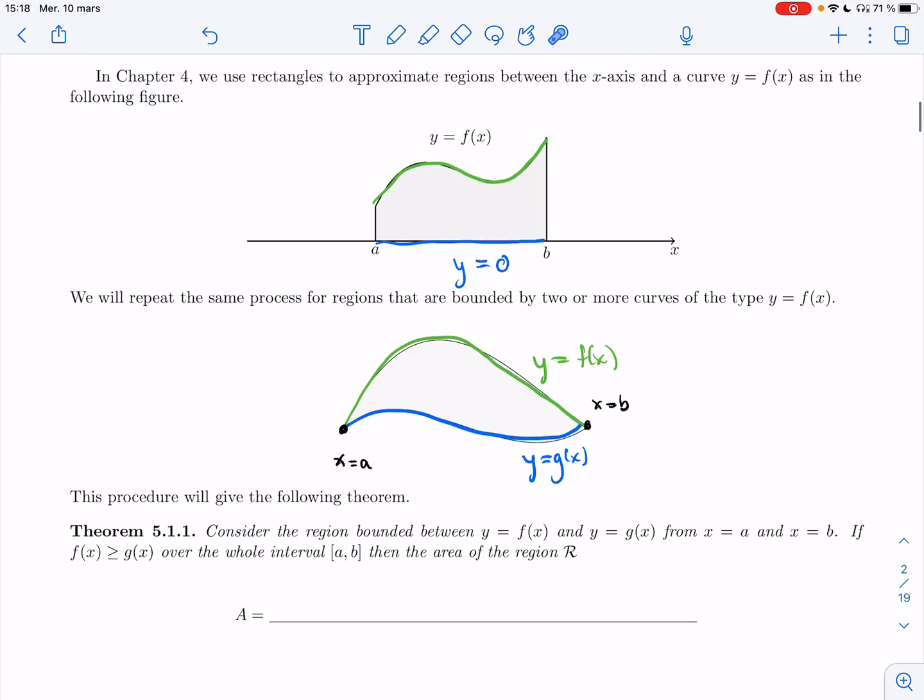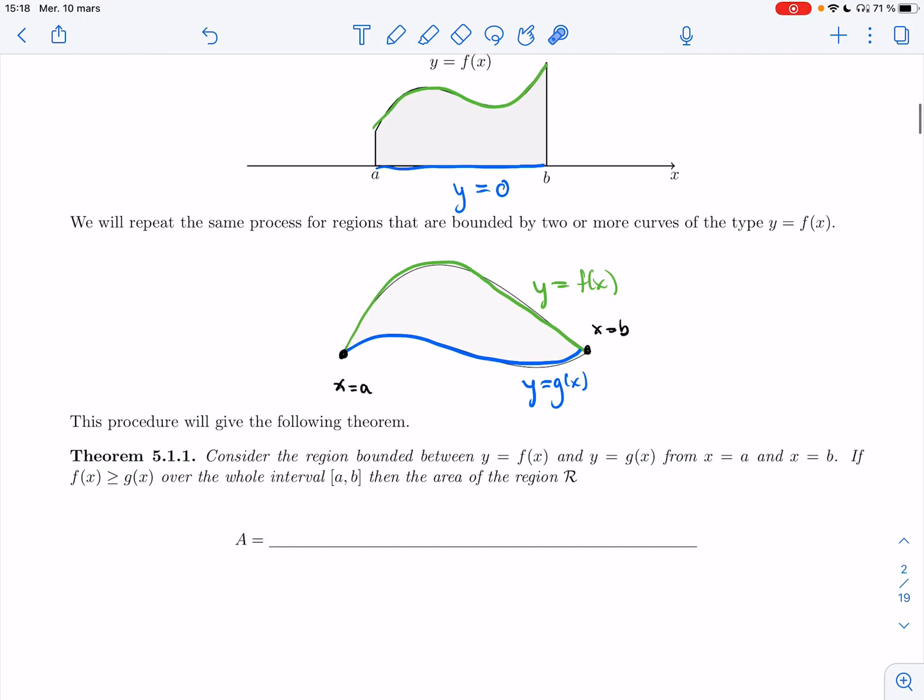So to find this area, here's what you should do. Consider the region bounded between y equals f of x, and y equals g of x, from x equals a, and x equals b. If f is bigger, if f is higher, over the whole interval a, b, then the area of the region R is going to be the integral from a to b of the bigger function minus the smaller one.